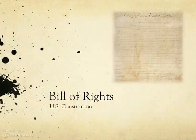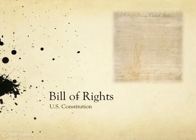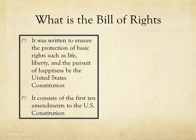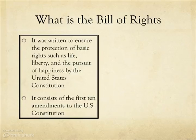Welcome to a quick overview of the United States Bill of Rights. In the next couple of minutes, we will take a brief look at each amendment and its basic meaning. The Bill of Rights is the first ten amendments to the United States Constitution, and it was written to protect the basic rights of all American citizens, regardless of their race, religion, or sex.